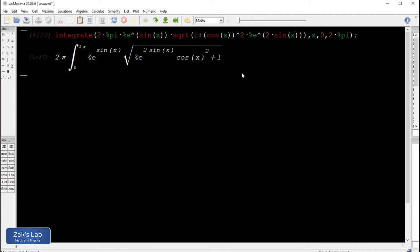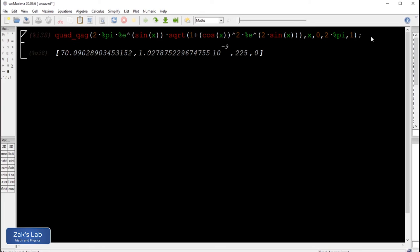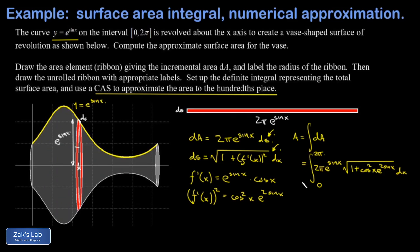So instead of using the integrate command, we switch to the quad_qag command - that's the numerical integration package for Maxima. We tack on a number between 1 and 6 at the end to specify which algorithm to use. I hit shift-enter and get 70.090... We were asked to round to the hundredths place, so our area is approximately 70.09 and we're done.